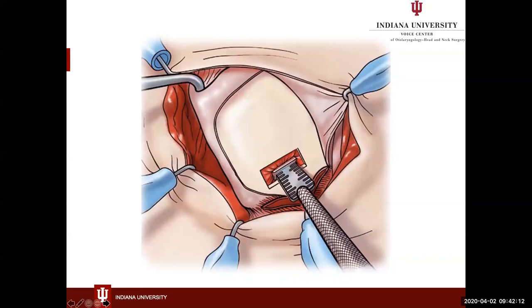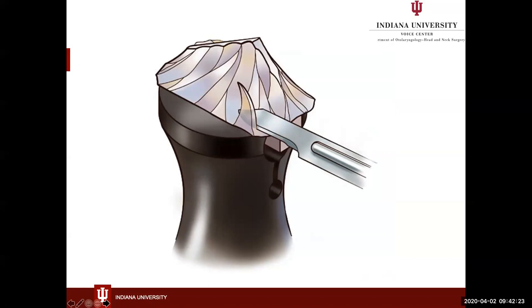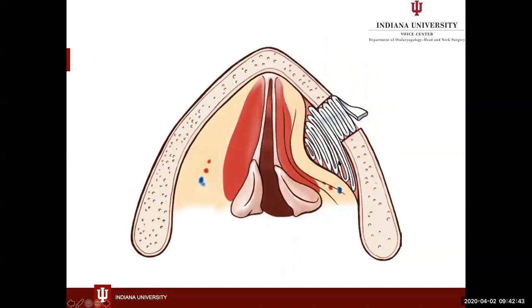A specialized tool is used to size the implant — determining height needed and location. For silastic, the implant is carved in a mountain shape sloping down. For gore-tex, layers of material are placed and moved around until voice improvement is maximized, then more layers are added. This schematic shows it medializing the vocal fold by pushing the paraglottic space and vocal fold inward.